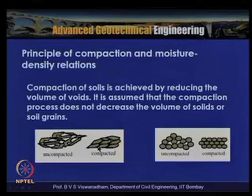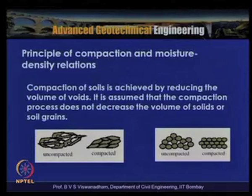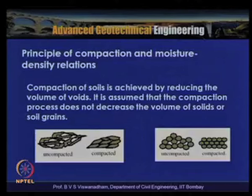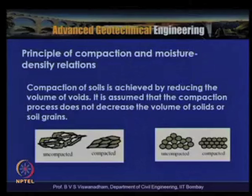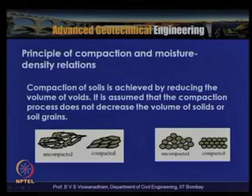The principle of compaction: soil compaction is achieved by reducing the volume of voids. The compaction process does not decrease the volume of solids — the volume of solids remains the same. What changes is the volume of voids as air is expelled. The uncompacted state has a loose particle arrangement, while the compacted state has a denser configuration.